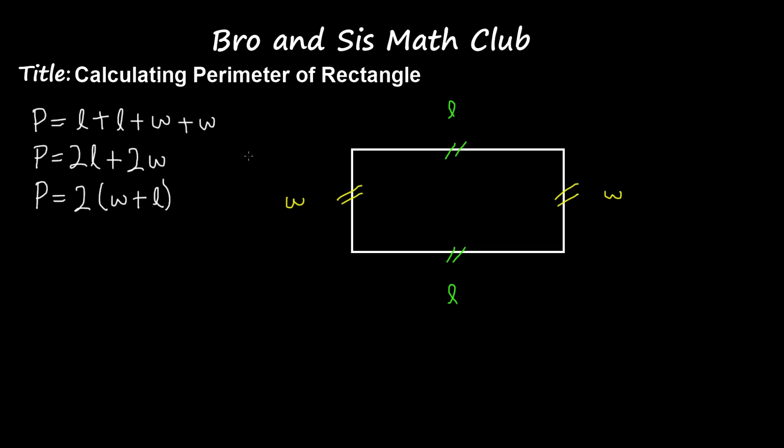Now let's go back to the rectangle. So let's say that these two sides, side Ls, are 12 inches in measurement, and each of the Ws are 8 inches in measurement.